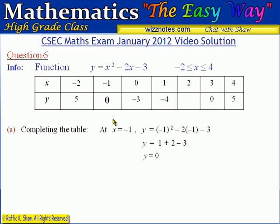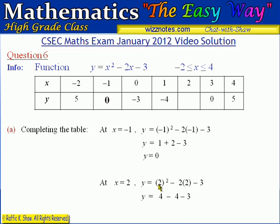For the cell where x is 2, we substitute into the function: 2 squared minus 2 times 2 minus 3. That gives 4 minus 4 minus 3, which equals negative 3. So the y value for x equals 2 is negative 3. That completes the table, which is the answer for part A.